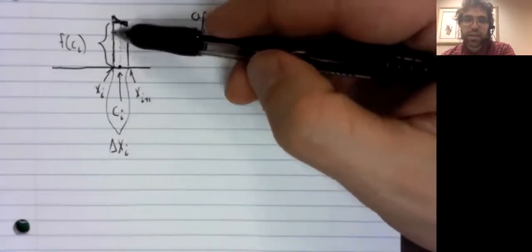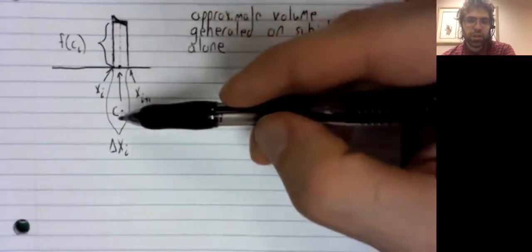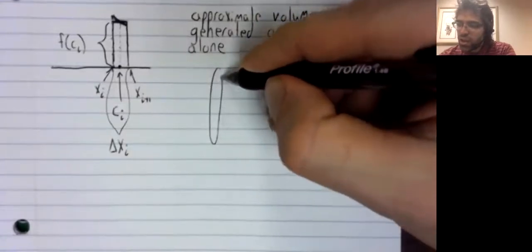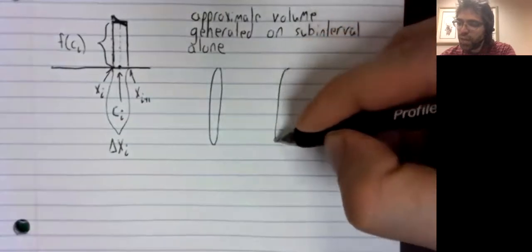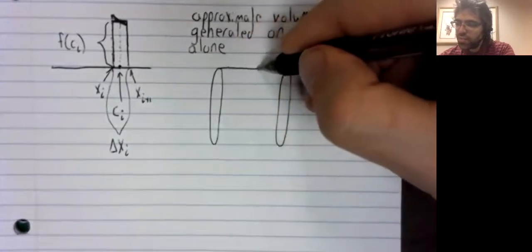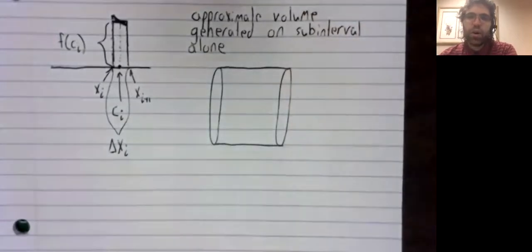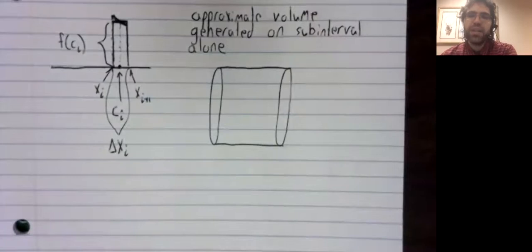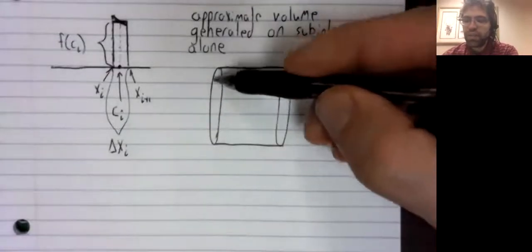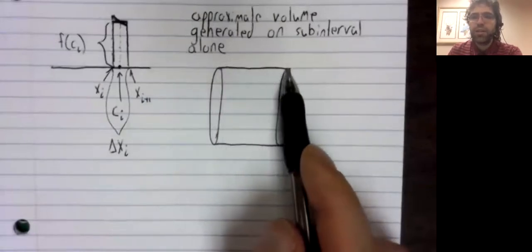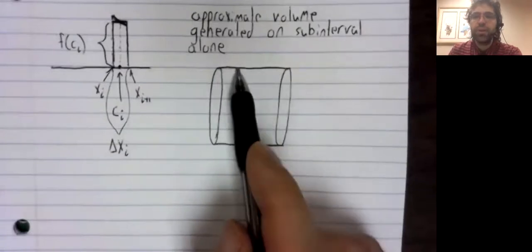And we're using this rectangle to approximate the curve. And the benefit of doing that is if we take this rectangle and rotate it around the axis, we get a shape we are familiar with. We get a cylinder. And the volume of a cylinder we know, or if we don't know it, we can look it up.